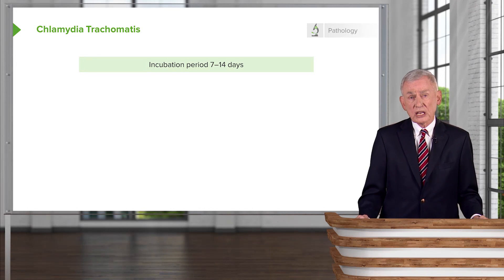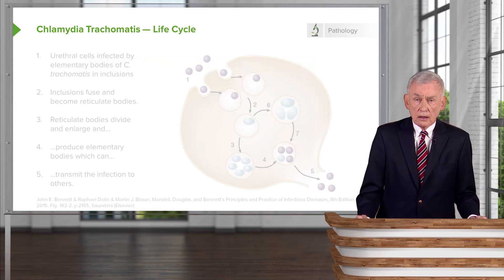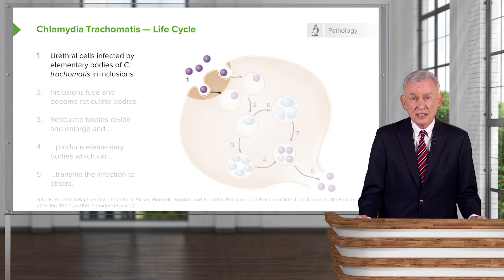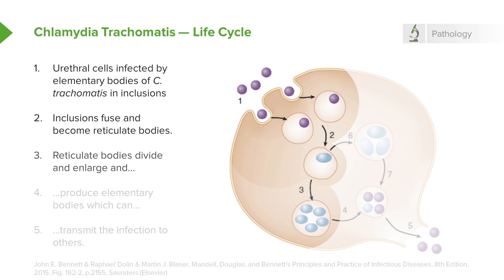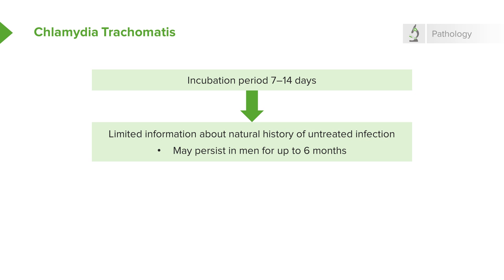The incubation period for Chlamydia trachomatis is much longer — from 7 to 14 days after exposure. The infectious agent is a tiny microorganism in the form of elementary bodies; this is the infectious form. The urethral cells are infected by these elementary bodies, as shown in this cartoon, and made into inclusions. These inclusions fuse and become reticulate bodies, and it's the reticulate bodies that divide and enlarge, producing more infectious particles known as elementary bodies, which can then transmit the infection to others. So as mentioned, the incubation period is 7 to 14 days.